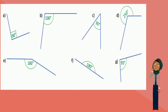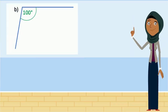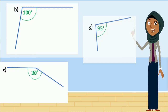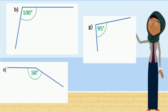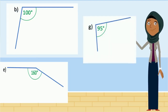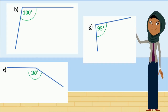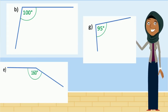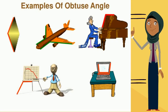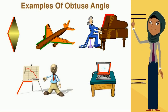Pause the video and see if you can find some of the obtuse angles here. When you have finished, you can continue watching to check your answers. Well done — you found them! As you can see, the obtuse angles are more than 90 degrees but less than 180 degrees. Here are some examples of everyday objects around us that have obtuse angles.